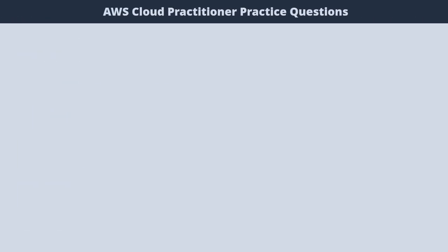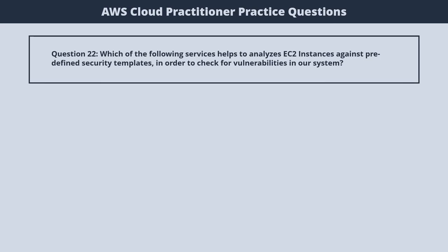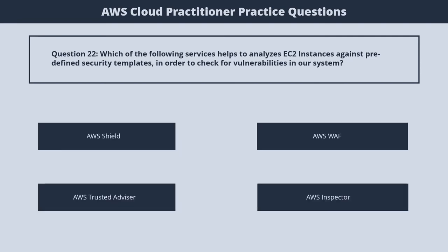Question 22. Which of the following services helps to analyze EC2 instances against predefined security templates in order to check for vulnerabilities in our system? 1. AWS Shield. 2. AWS Web Application Firewall. 3. AWS Trusted Advisor. 4. AWS Inspector. The correct answer is 4. AWS Inspector.